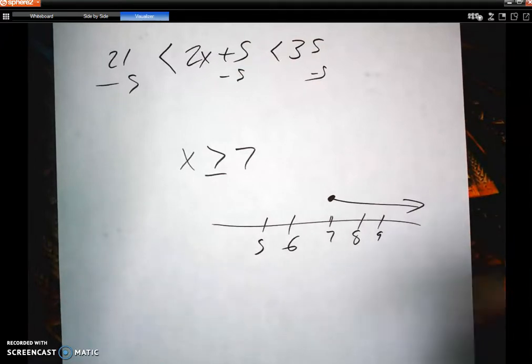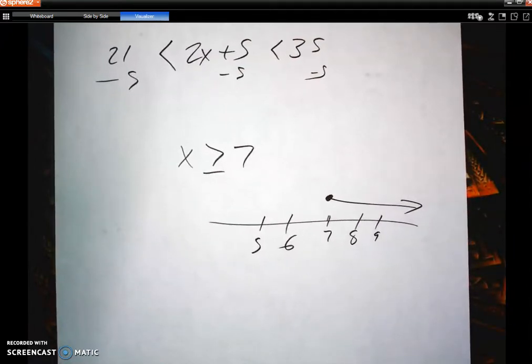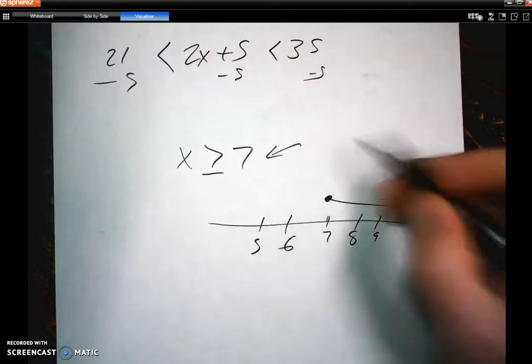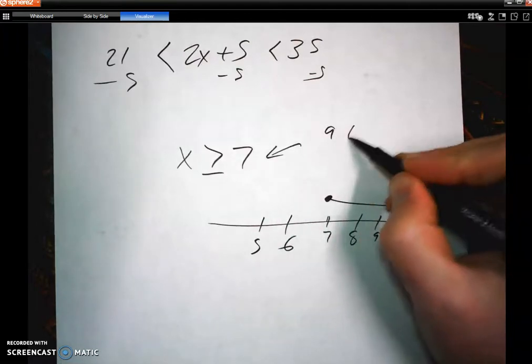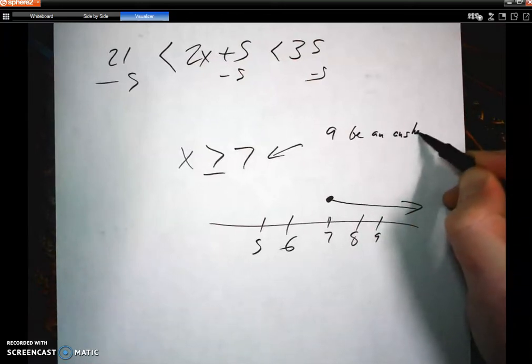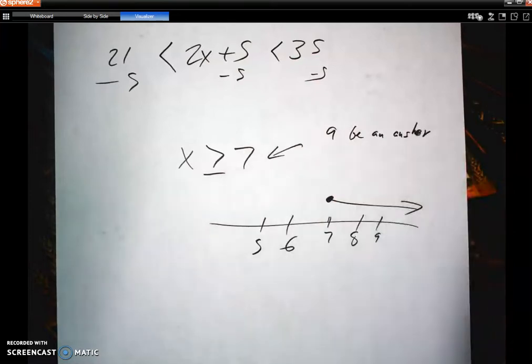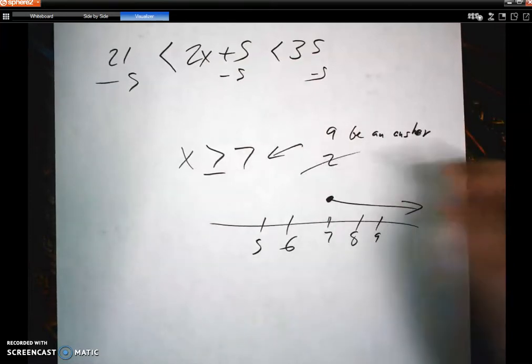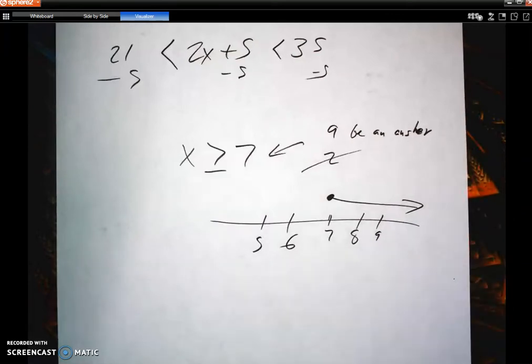Do you understand what those answers mean? Like if that is the case, can 8 or 9 be an answer? Can 9 be an answer to x is greater than 7, but can 2? 2 can't be because it's not greater than 7 and stuff like that.